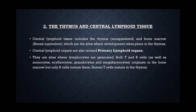Second one, the thymus and central lymphoid tissue. The central lymphoid tissue is also known as primary lymphoid tissue, which includes thymus and bone marrow. These are the sites where T and B lymphocytes are generated and matured.